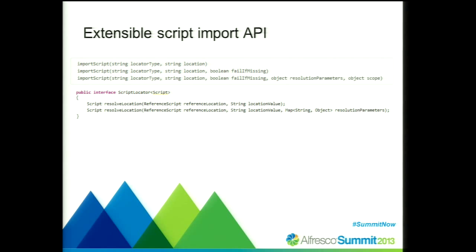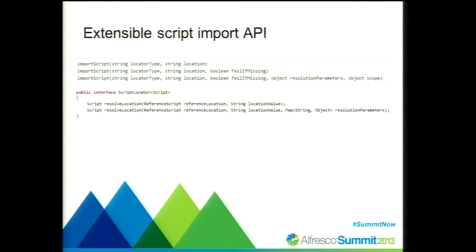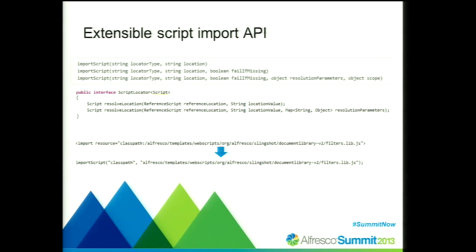The actual locators are implemented as Java objects provided by an interface. There is a reference script parameter on the Java side — the current script being executed can be used as a reference for any location for imports and allows you to resolve scripts relatively. For example, for a classpath script you can do relative lookups. When the script environment is installed in an Alfresco system, it automatically and transparently changes all existing import statements to the corresponding script API calls. So if you install the script environment, all import statements are no longer merged but are automatically switched to this way of importing scripts.